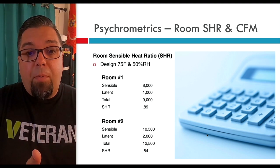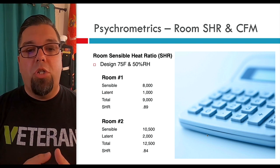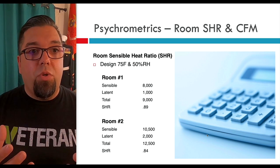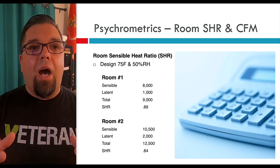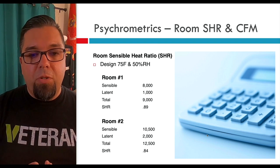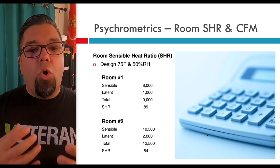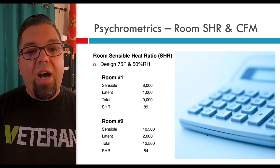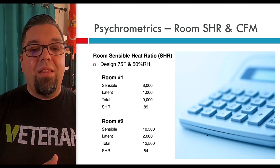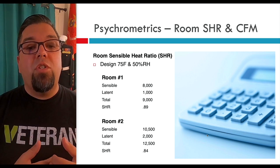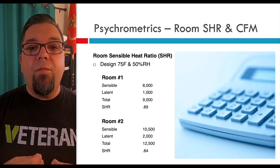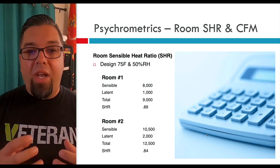Room number one was 0.89. I'm actually going to use room number two because it's a larger space and you could apply this to a ductless unit or zoning out one area. Room number two: 10,500 sensible, 2,000 BTUs latent. Total gains were 12,500 — pretty close to a one-ton system. Doing the math: 10,500 divided by 12,500 gives us a sensible heat ratio of 0.84. So 0.84 is what we're going to use.